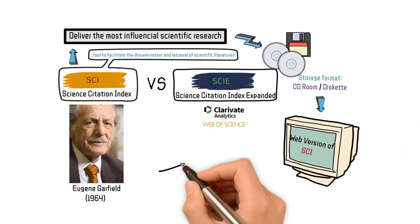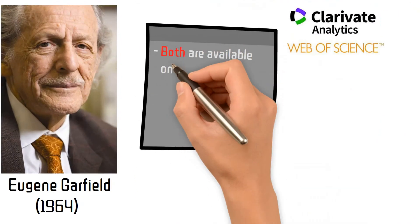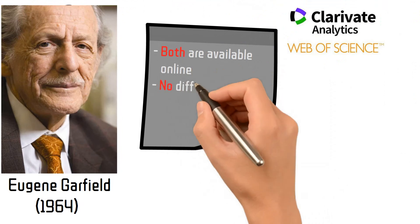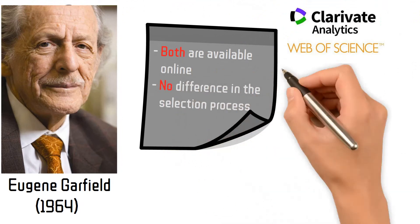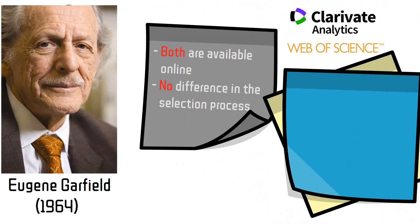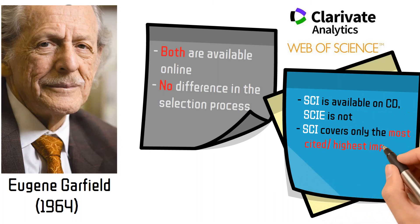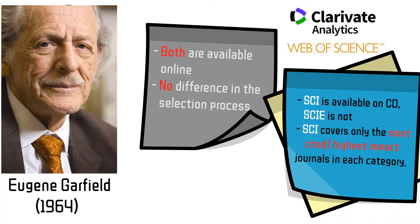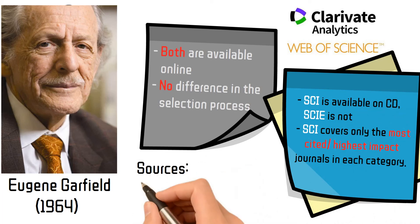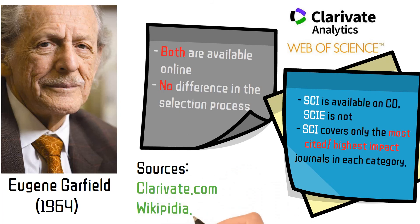Long story short, SCI and SCIE are both available online and there is no difference in the selection process. However, while SCIE is available on CD, SCI is not. SCI covers only the most cited and highest impact journals in each category, mainly because of the constraints of CD-ROM and print media.